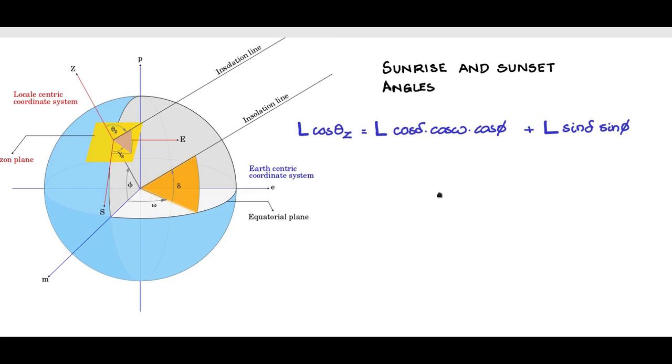Therefore, at sunset or sunrise, we have θz, the zenith angle, equal to π/2, 90 degrees. This will be 90 degrees because the insolation line is along the horizon plane.